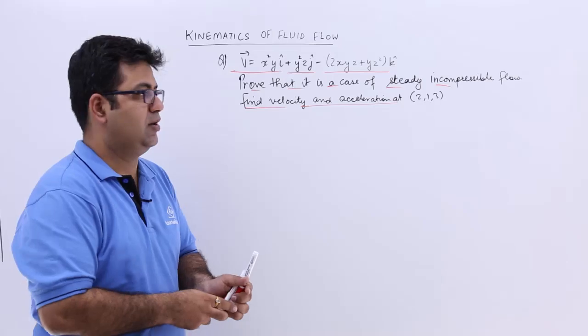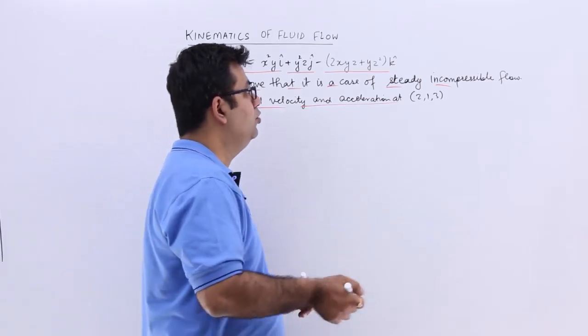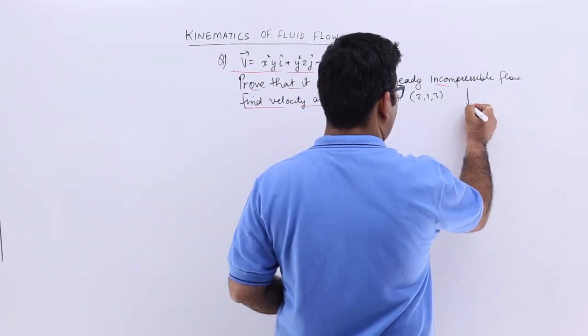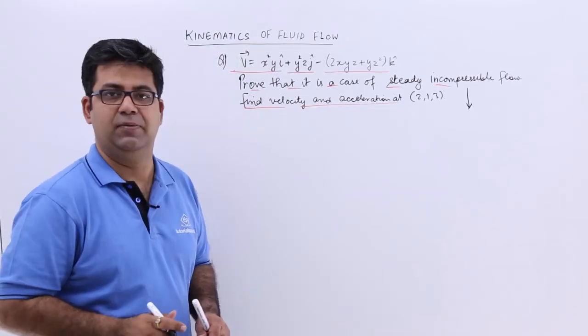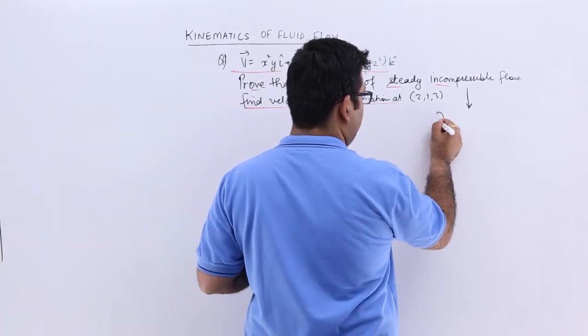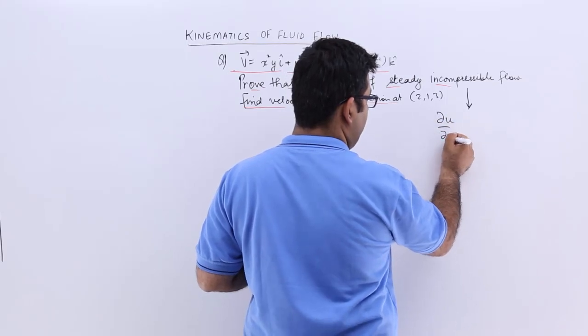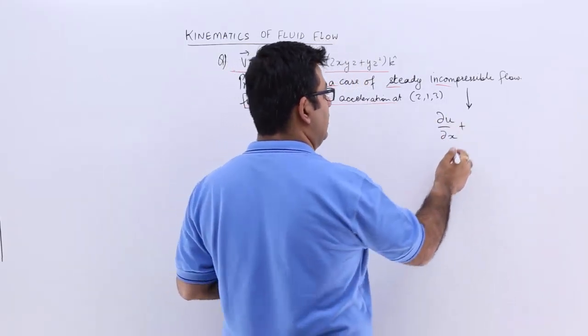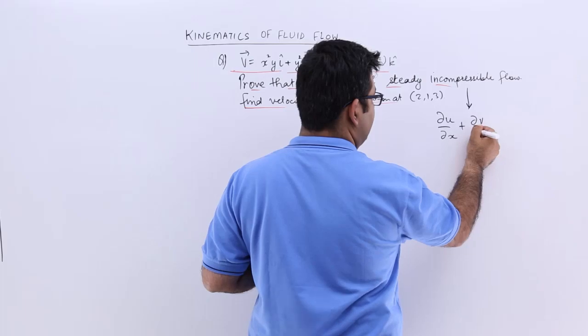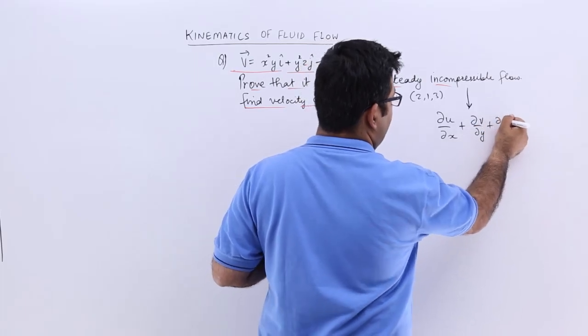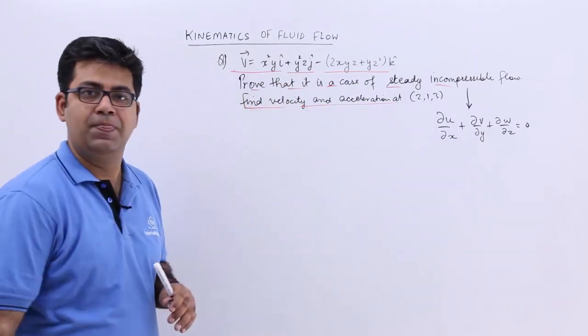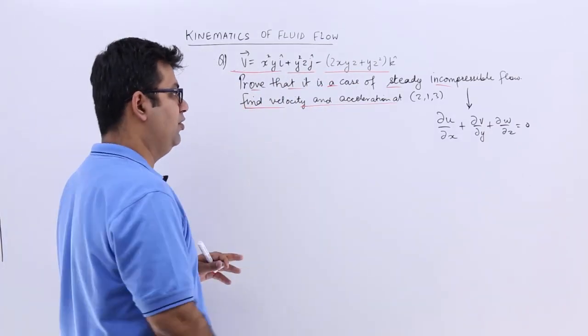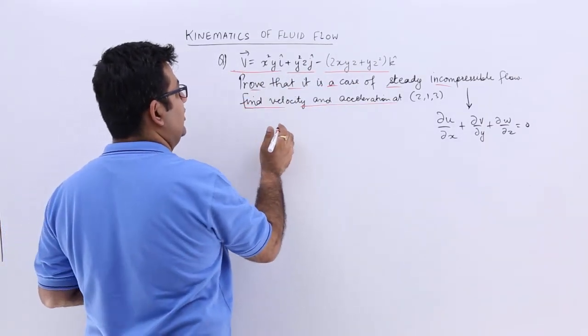Again, a very simple question. You need to remember the condition for a flow to be steady and incompressible, that is you need to prove that ∂u/∂x + ∂v/∂y + ∂w/∂z = 0. So before that let's identify u, v and w.